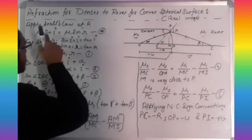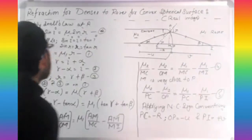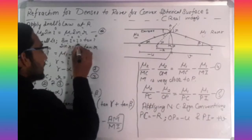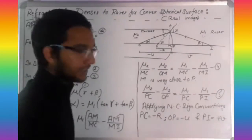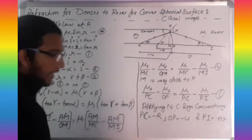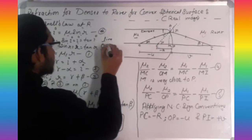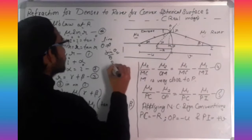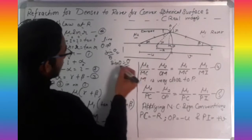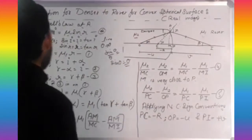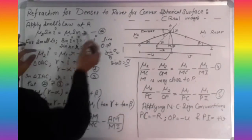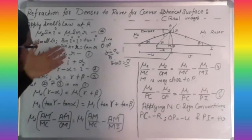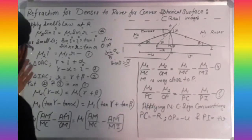Applying Snell's law: mu2 times sin i equals mu1 times sin R. For small angles, sin equals the angle itself, so mu2 times i equals mu1 times R. We call this equation one.